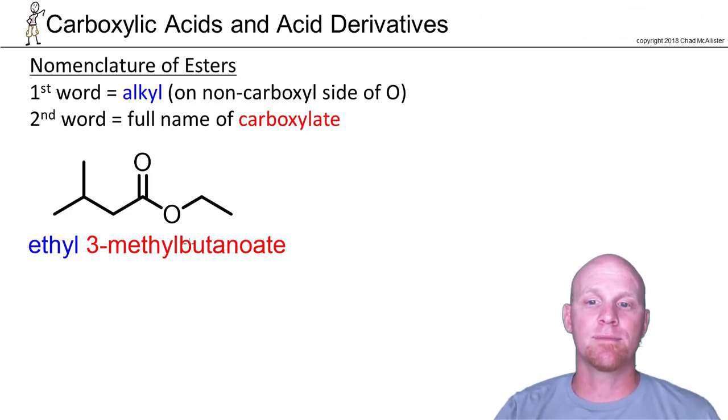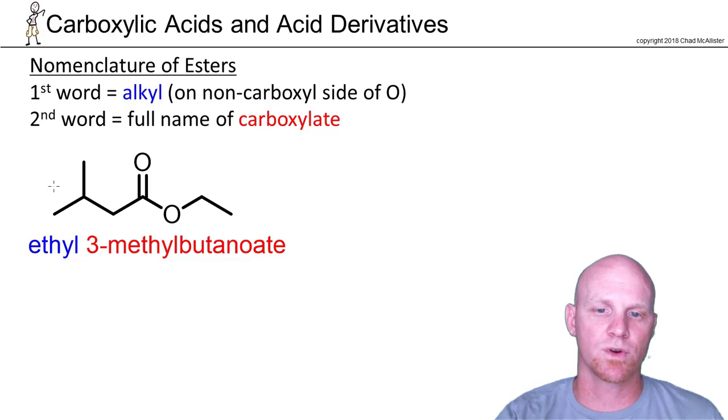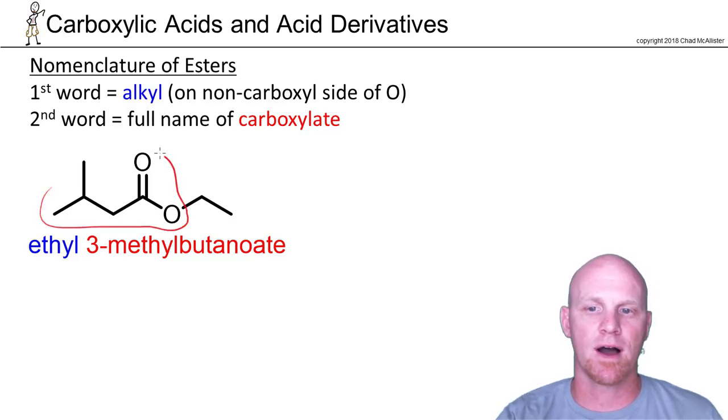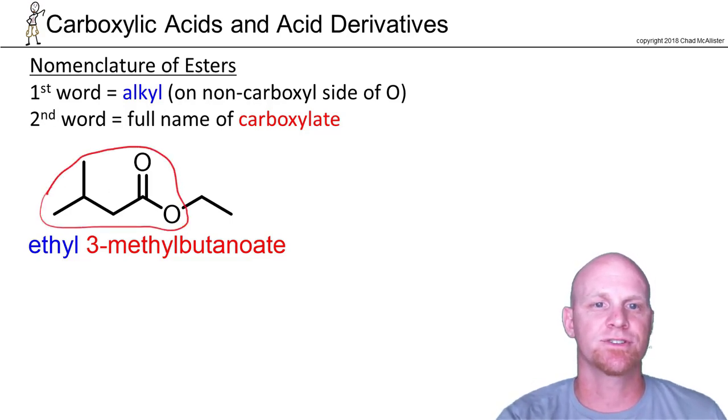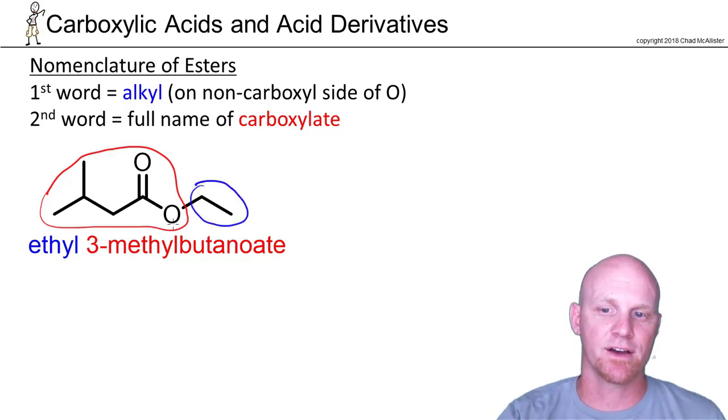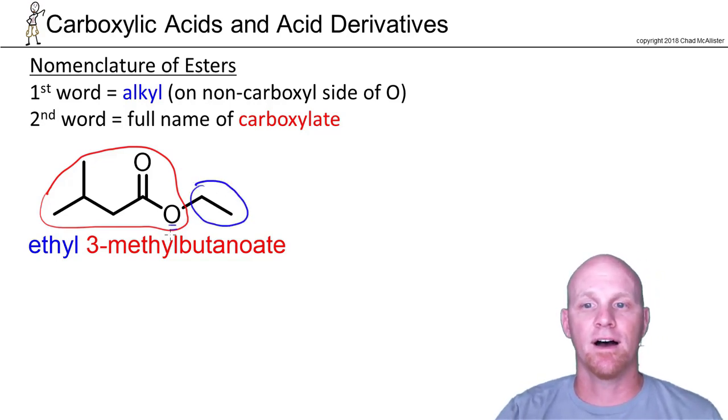When we name esters, we always name them two words, and one of those words is based on the carboxylate your ester is derived from, and the other word is just the alkyl substituent on the other side of your oxygen here of the ester.